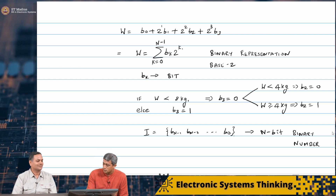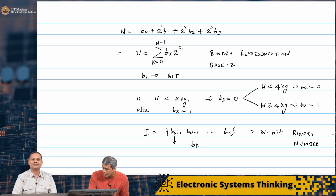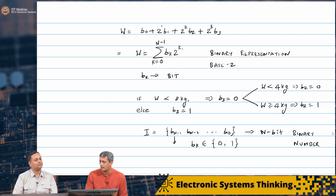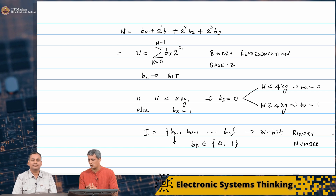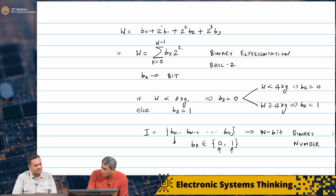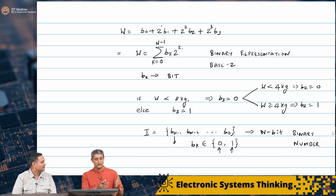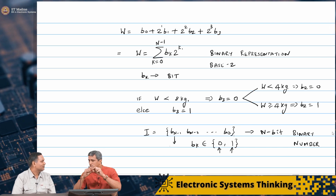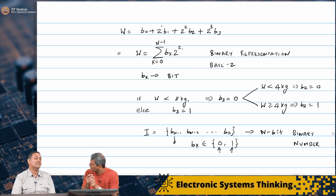Each B_k can take only 2 values: 0 or 1. Either the 1 kg weight is there in that position or it is not there. Essentially these values can be stored and processed in a digital computer. Whatever we spoke about the DRAM, the cache and all that - these can store sequences of binary numbers, basically bits.